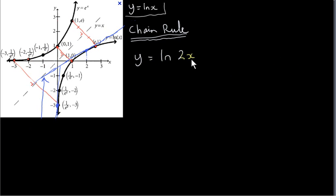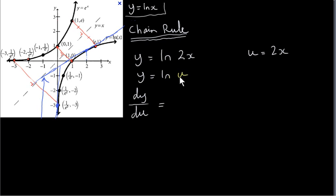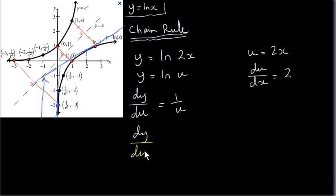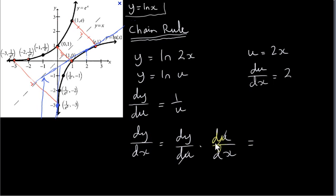Suppose we want to differentiate y equals ln of 2x. We can use the chain rule: let u equal 2x, so our function is y equals ln of u. Then dy/du equals 1 over u, and du/dx equals 2. To get dy/dx, we multiply dy/du by du/dx. dy/du is 1 over u, and u is 2x, so we have 1 over 2x times 2, which gives us 1 over x.